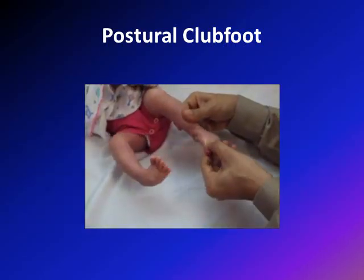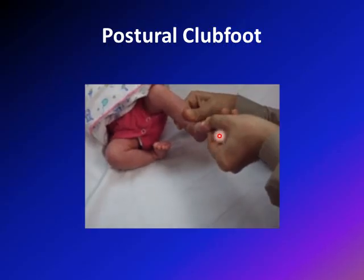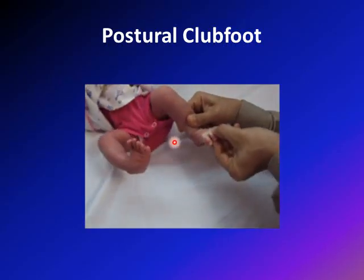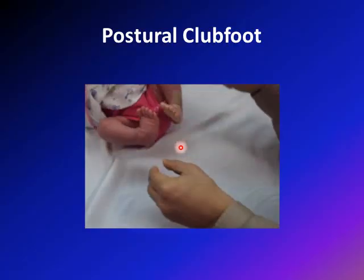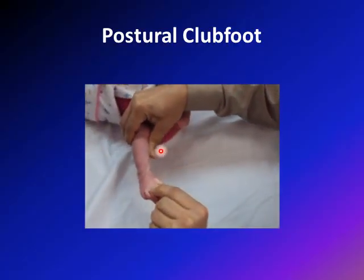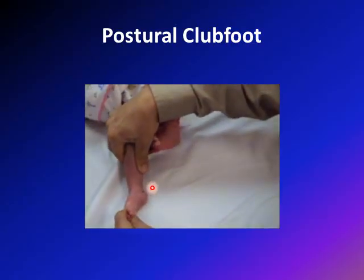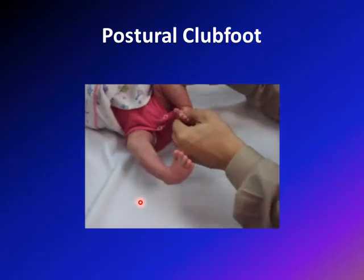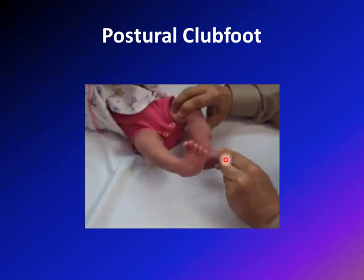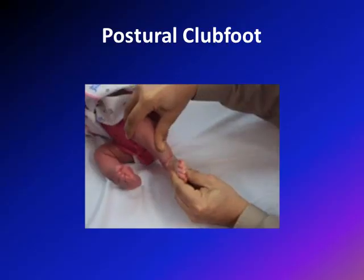This video shows the difference between rigid and postural clubfoot. This child was referred for bilateral clubfeet. On his left side, the deformity can be fully corrected. However, on the right side, I am pushing as hard as I can but cannot fully correct the deformity — that is the rigid, true clubfoot side.